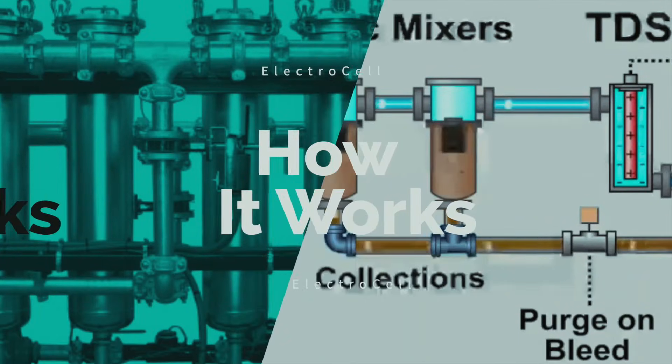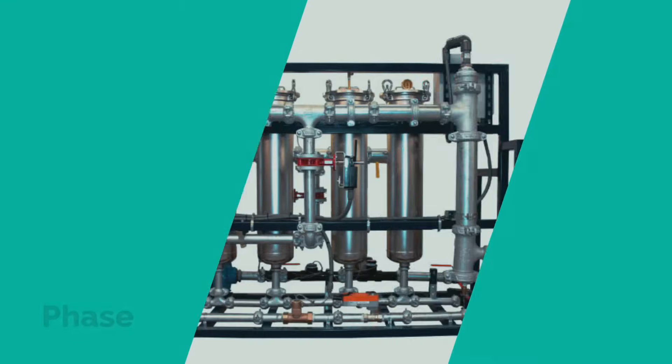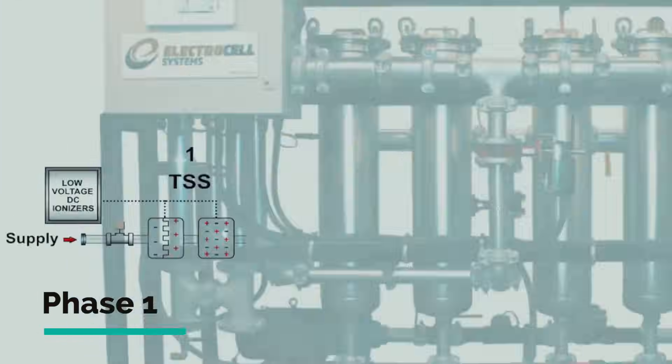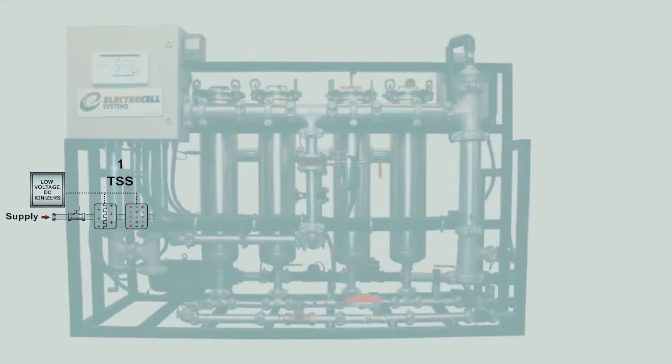Let's take a schematic look at how it works. Phase one of the three-step treatment process is the application of alternating positive and negative electrical charges to the suspended particles using a low voltage DC ionizer. This makes the oppositely charged suspended particles attract to each other and, as a result, grow in size and weight.